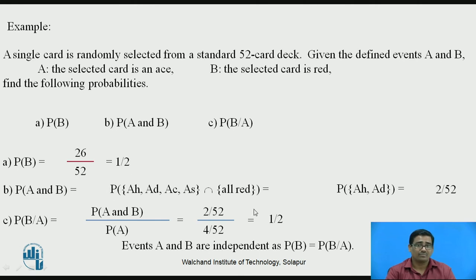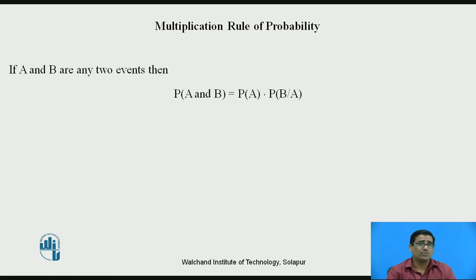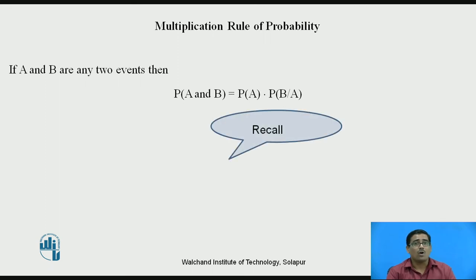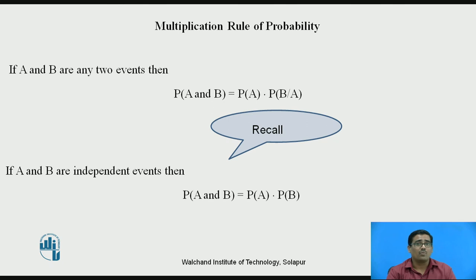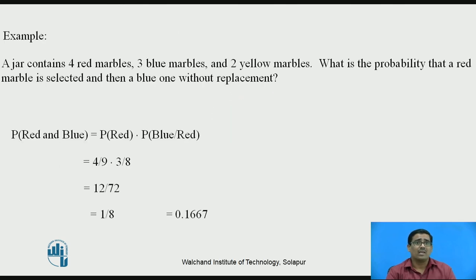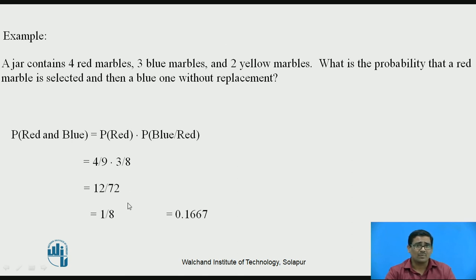We calculate the same procedure used previously and obtain the answer. Now, multiplication rules of probability: if A and B are two events, then P(A and B) = P(A) multiplied by P(B|A). If A and B are independent events, the formula becomes P(A and B) = P(A) multiplied by P(B). For example: a jar contains 4 red marbles, 3 blue marbles, and 2 yellow marbles. What is the probability that a red marble is selected and then a blue one, without replacement? Using these formulas, the answer becomes 0.1667.